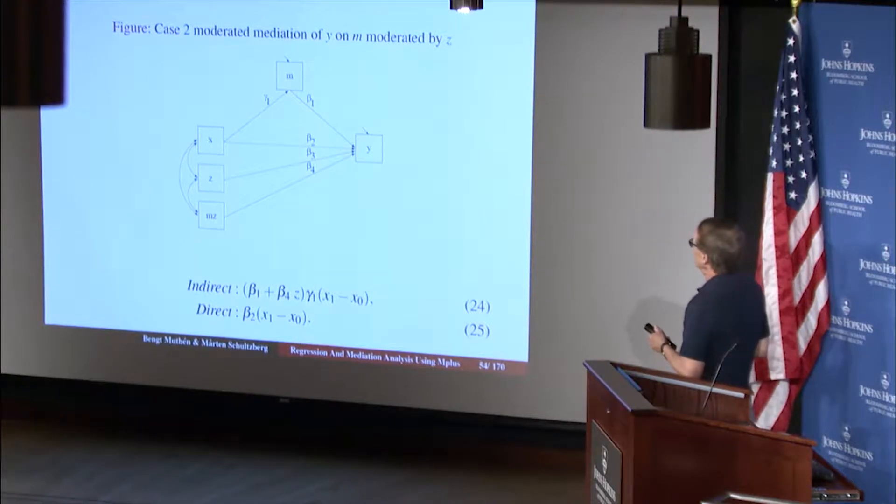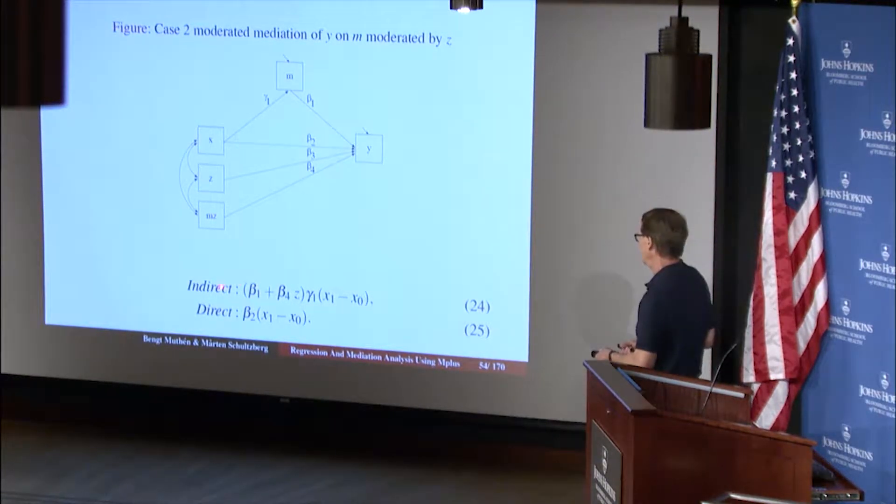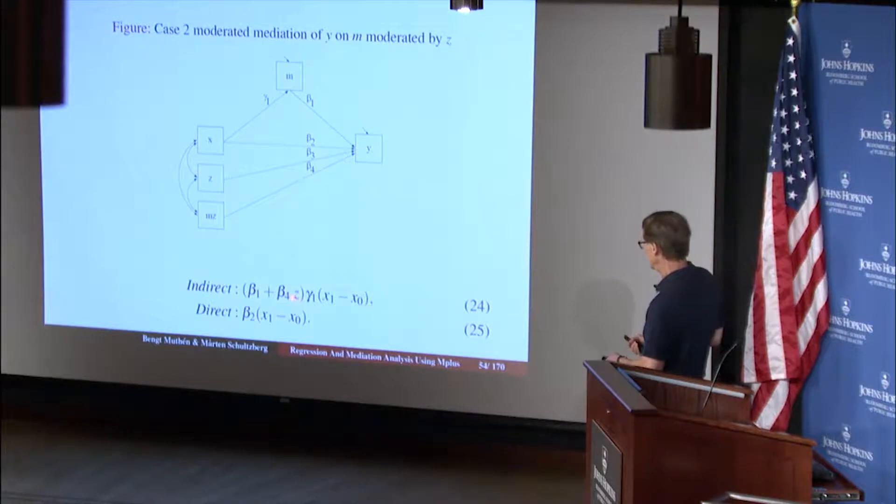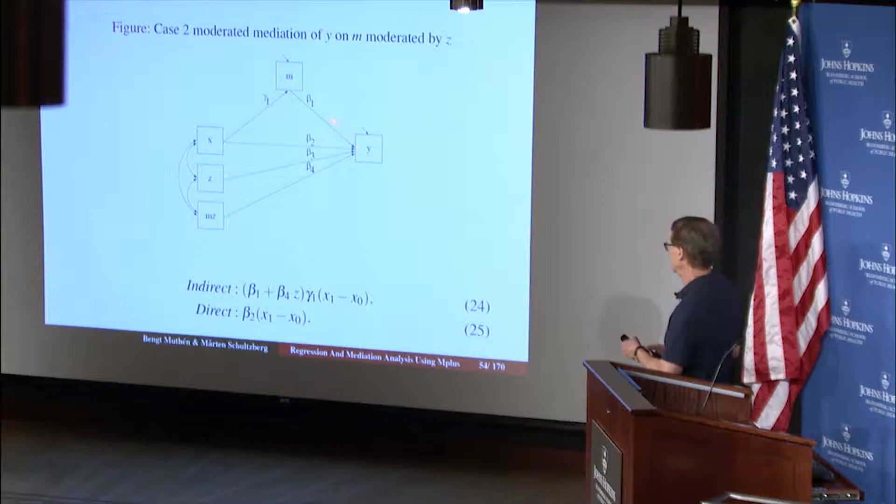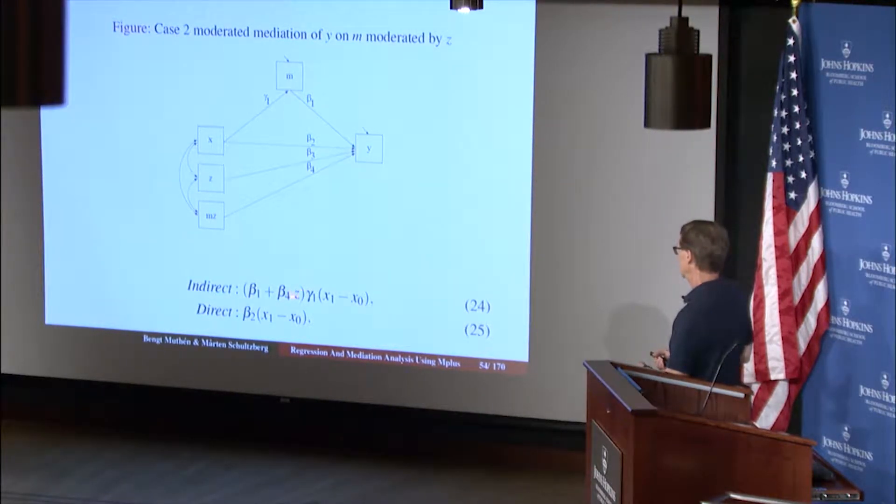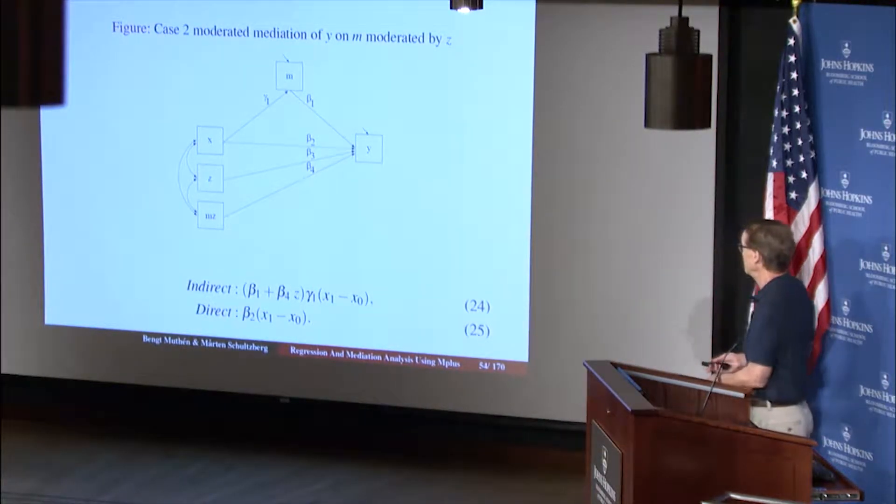Case 2: you have M interacting with Z. The moderation is only with respect to Y as a dependent variable. That is, Z moderates the effect of M on Y. The indirect effect is not only beta 1 times gamma 1, but beta 4 times Z times gamma 1. Z moderates the effect with respect to how M influences Y, so that regression has a different slope depending on the Z values. The direct effect is beta 2 times x1 minus x0, quite simple in that case.